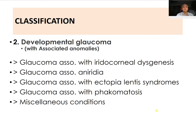The second classification is developmental glaucoma, which is associated with anomalies like iridocorneal dysgenesis and aniridia, with ectopia lentis syndromes, with phacomatosis, and miscellaneous conditions.